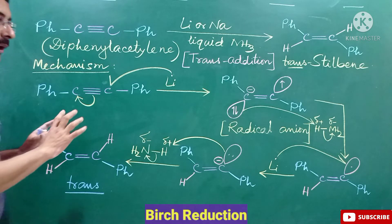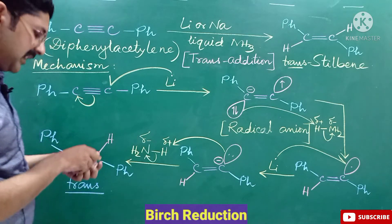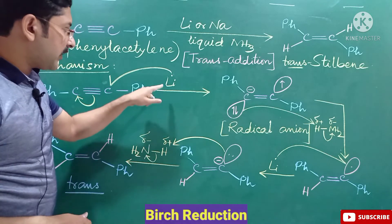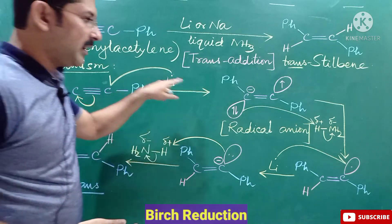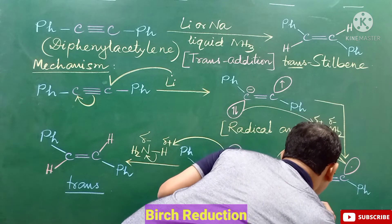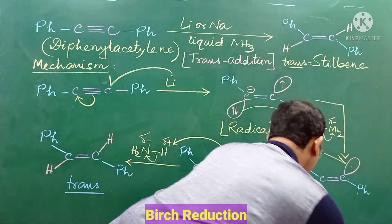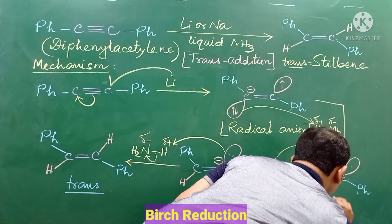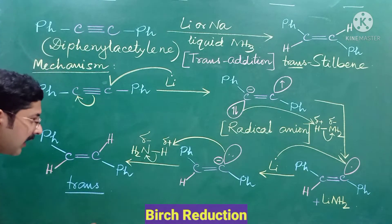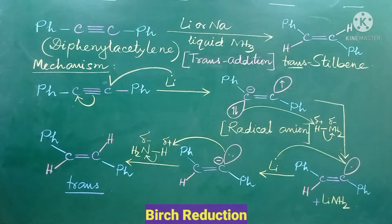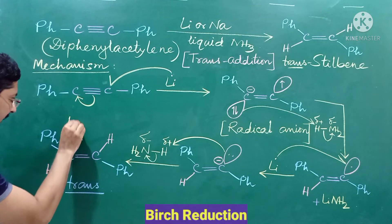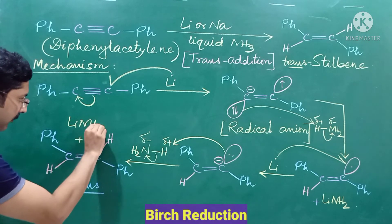This is our complete mechanism of Bart's reduction. Lithium donates one electron, so it is a single-headed arrow — a fish hook arrow — and two electrons of the bond go to the carbon, so it is a double-headed arrow. There are two byproducts: Li⁺ is released, and NH₂⁻ is released, so lithium amide (LiNH₂) is the byproduct.